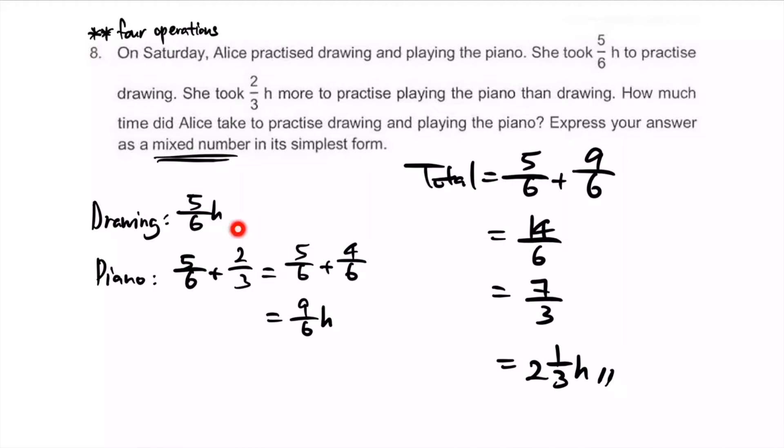How much time did she take to practice both? Special requirement: mixed number. Add these two quantities: 5/6 plus 9/6 equals 14/6. Simplify, divide by 2, gets us 7/3. Convert to a mixed number and write the units down: 2 1/3 hours.